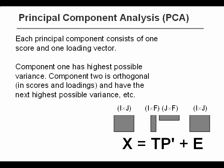Each principal component or latent variable consists of one score and one loading vector. Component number one, the first column of T and the first column of P, has the highest possible variance. Component number two is orthogonal to this component and has the next highest variance, et cetera, for additional components.